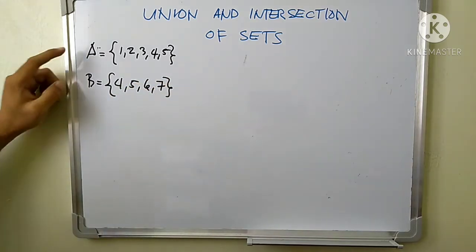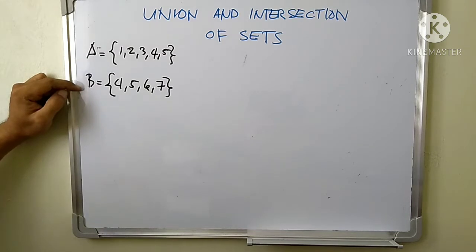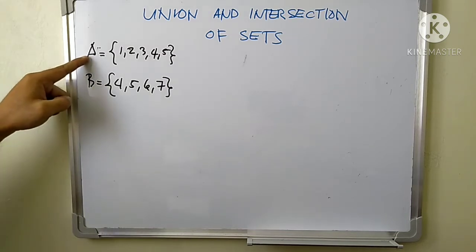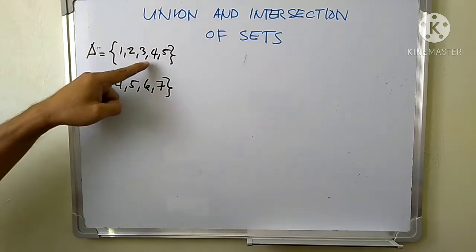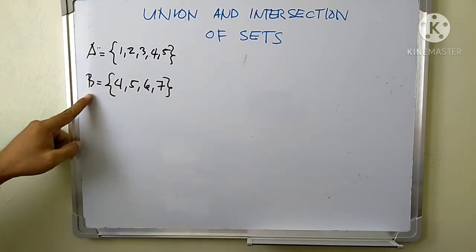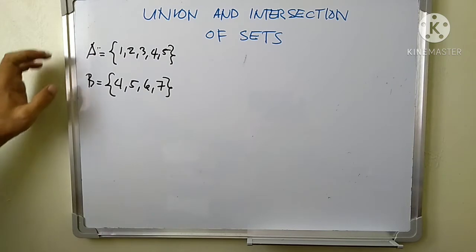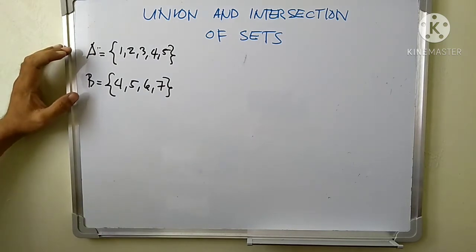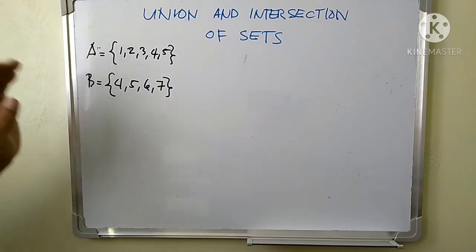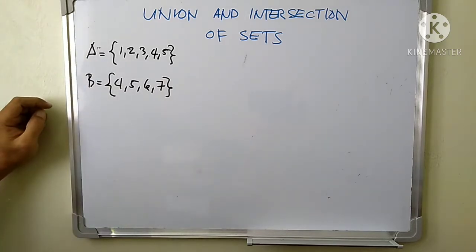Now we have sets A and B. In set A we have elements 1, 2, 3, 4, and 5, and set B we have elements 4, 5, 6, and 7. So to understand this using Venn diagram, we plot all the elements for each set.